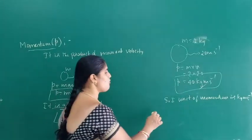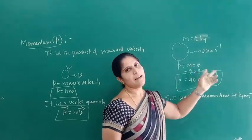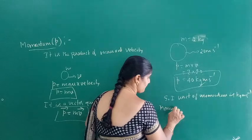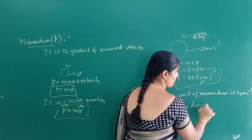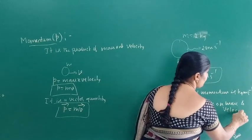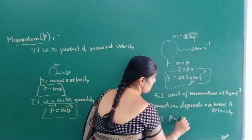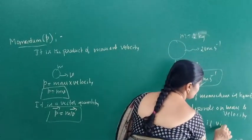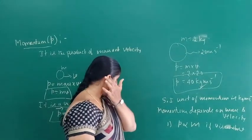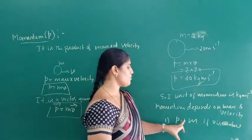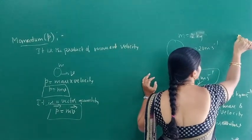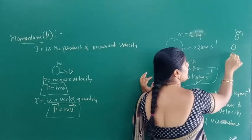Momentum depends on mass and velocity. On which factors does momentum depend? Momentum depends on mass and velocity. For the first case, momentum is directly proportional to mass only if velocity is constant. If velocity is constant, P is directly proportional to mass.